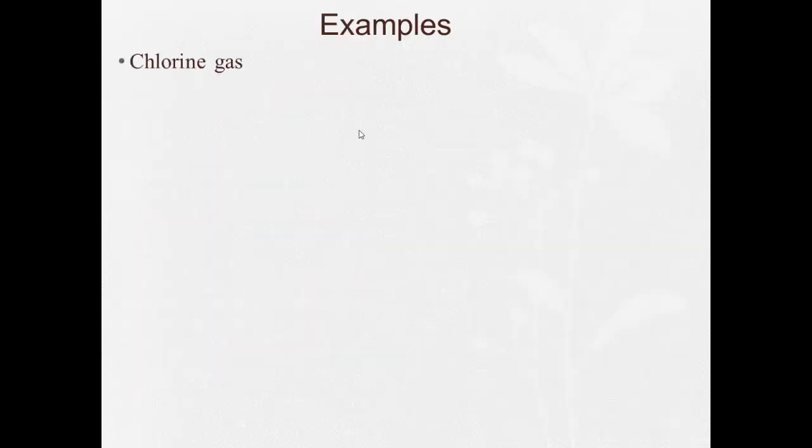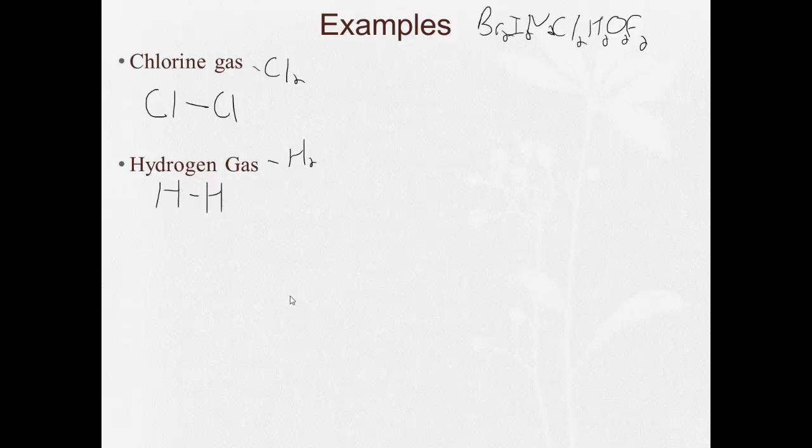So look at a couple of examples, like chlorine gas. We have to remember our BRINCL-HOF again for these. So chlorine gas, it's Cl2, Cl-Cl. Hydrogen gas, H2. With these, why is it only a single bond?